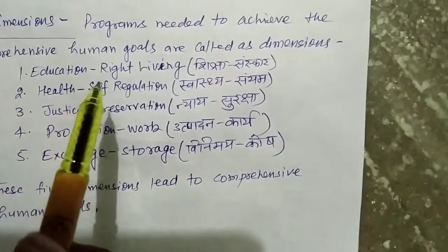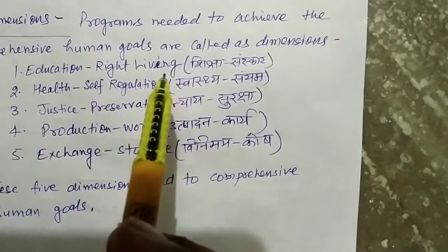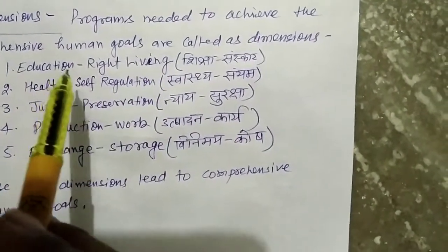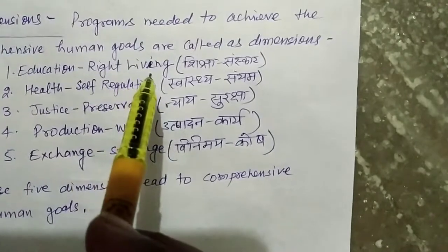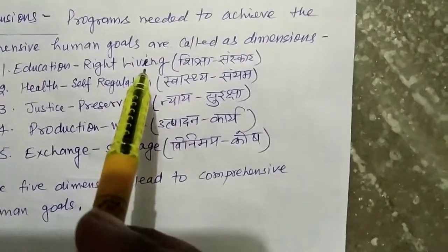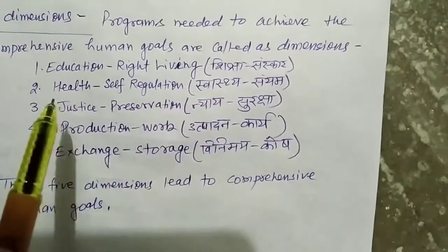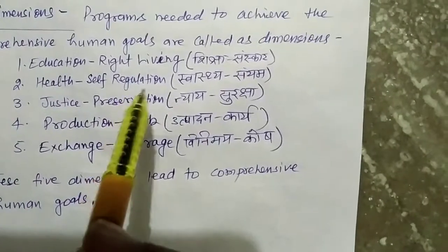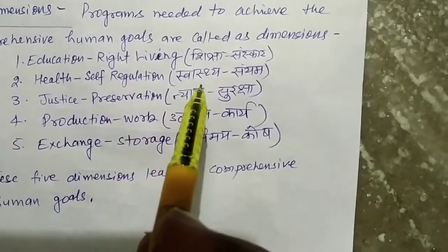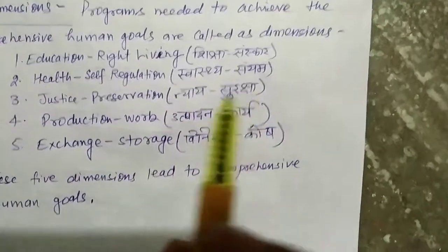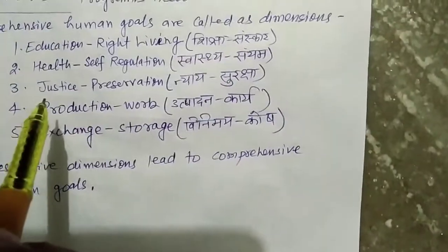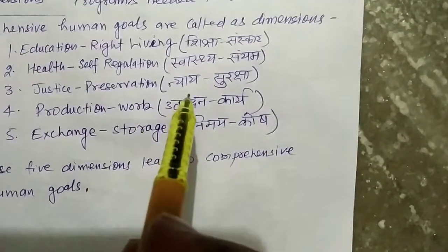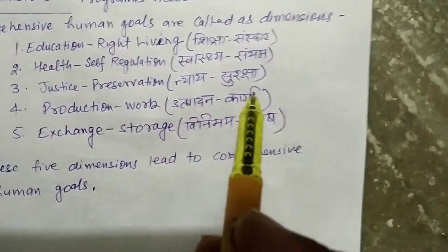Number one: education and right living — education means theoretical view, right living means living with the values. Number two: health and self-regulation, that is swastha or sainyam. Number three: justice and preservation, that is niyaay or suraksha.